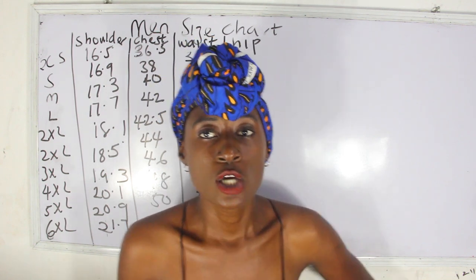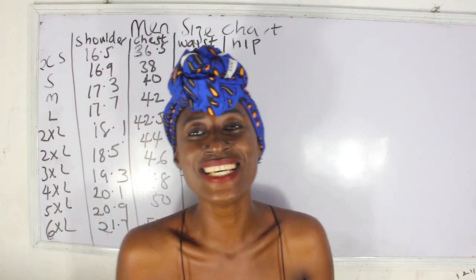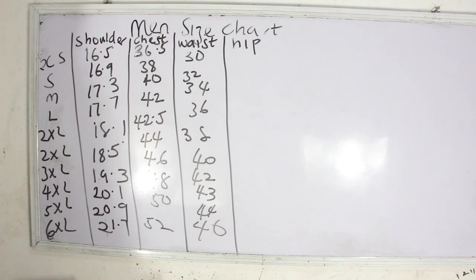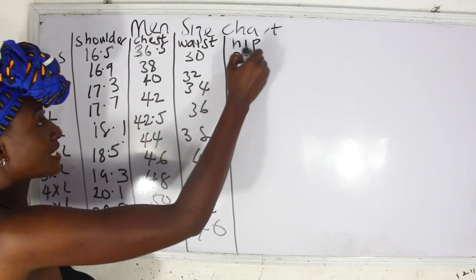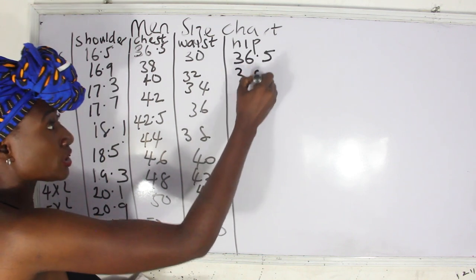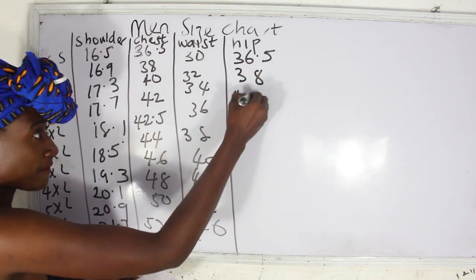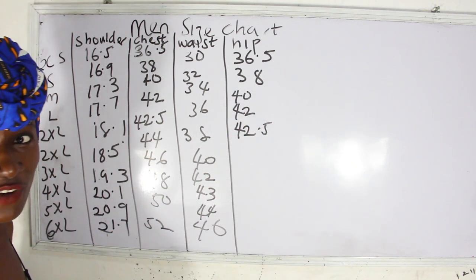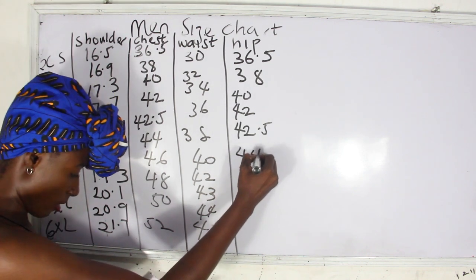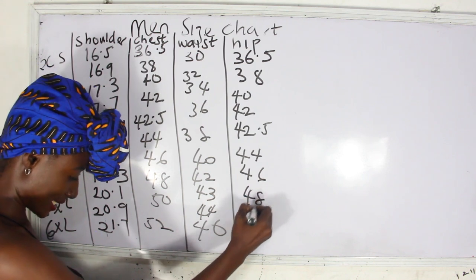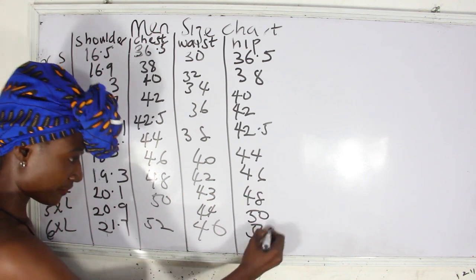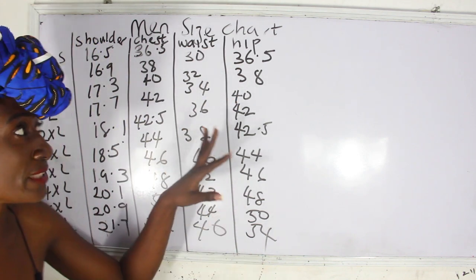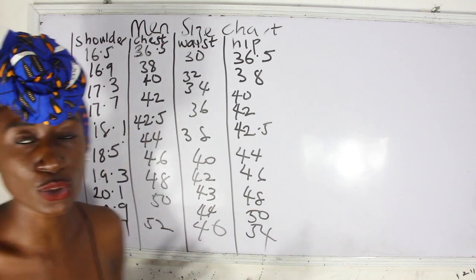Now for the male hip measurements: extra small — 36.5 inches, small — 38, medium — 40, large — 42, XL — 42.5, 2XL — 44, 3XL — 46, 4XL — 48, 5XL — 50, 6XL — 54. These are the measurements for the hip, waist, chest, and shoulder for males. Note that when taking male measurements, the shoulder usually drops.